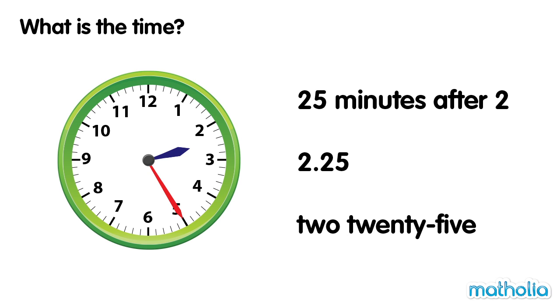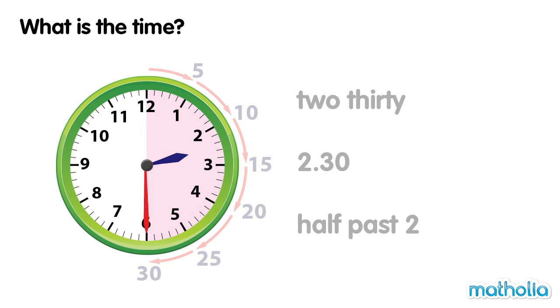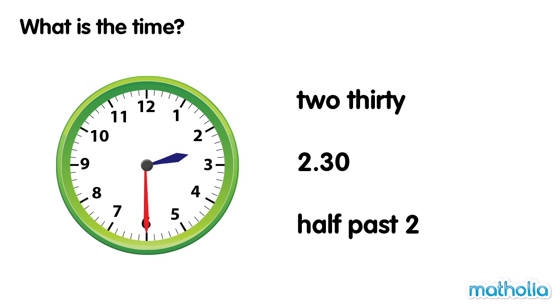It's two o'clock. Thirty minutes have passed. What's the time? Two thirty. It's half past two.